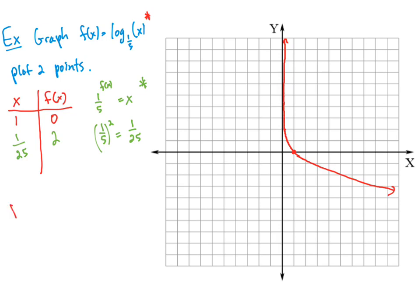We want to figure out the domain. We have the vertical asymptote along the y-axis, so our smallest x-value — we can get really close to 0 but don't include 0. So the domain is anything positive going to positive infinity. The range is all real numbers. The asymptote is the vertical asymptote x is equal to 0.